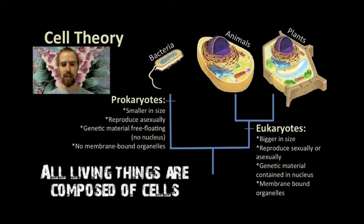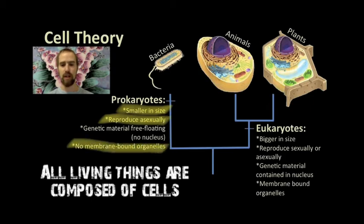This cell, the bacterial cell, is a prokaryote, and here we see some of the defining features of prokaryotic cells. They are smaller in size than eukaryotic cells, they reproduce asexually, they lack internal membranes, and therefore have no cellular organelles. Consequently, they have no nucleus, and therefore their DNA is free-floating inside the cell.